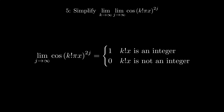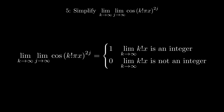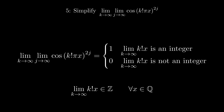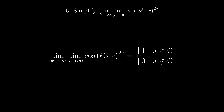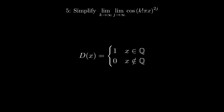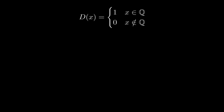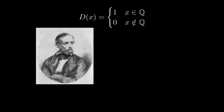In order for the limit to be one, the cosine expression must be either positive one or negative one, therefore k factorial times x must be an integer. When k goes to infinity, k factorial times x is an integer if and only if x is a rational number. This fact is also used in the proof of the irrationality of e — check out that video. So this expression is one when x is rational but zero when x is irrational.